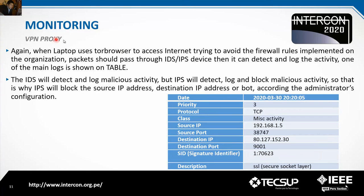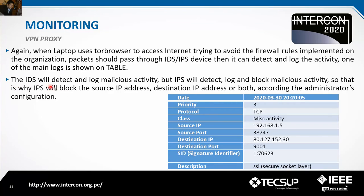VPN/proxy detection: when a laptop uses Tor Browser to access the internet trying to avoid firewall rules, packets pass through the IDS/IPS device, which detects and logs the activity. The log shows priority 3, protocol TCP, class: miscellaneous activity, with source IP and description referencing SSL (Secure Socket Layer). The IDS will detect and log malicious activity, while the IPS will detect, log, and block malicious activity.